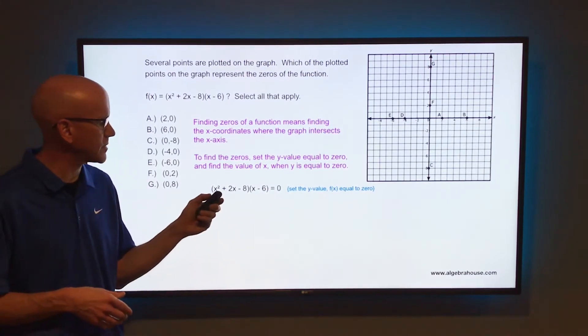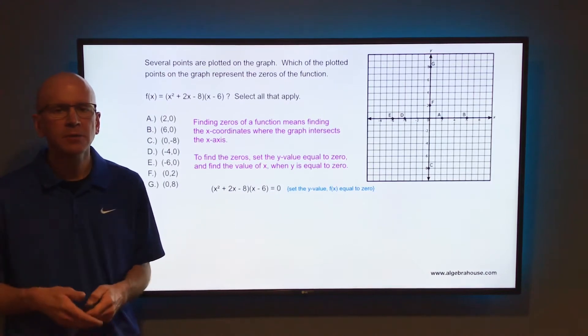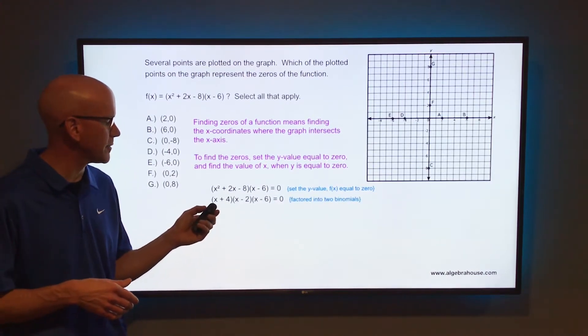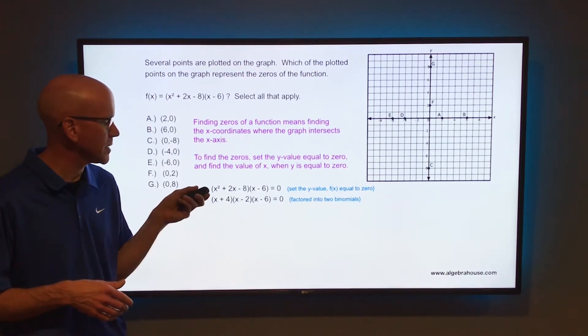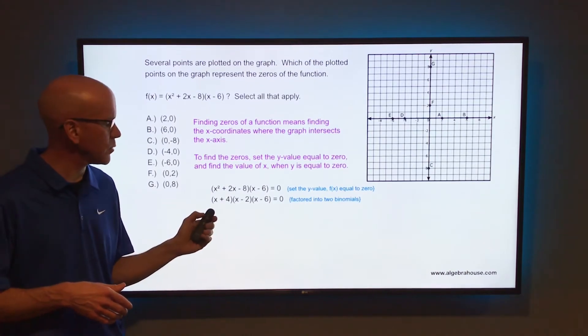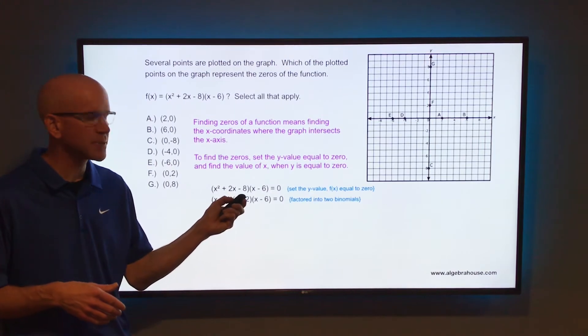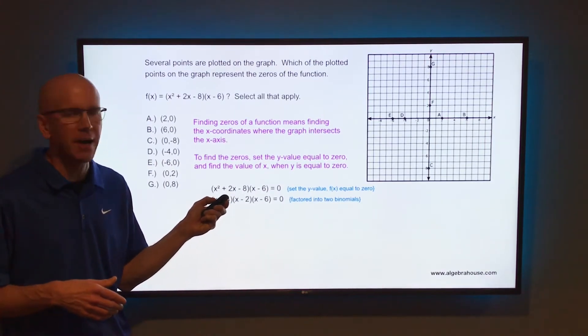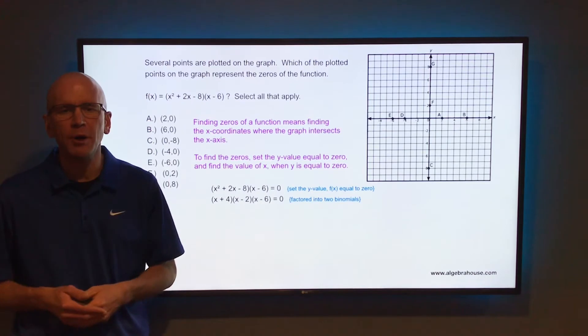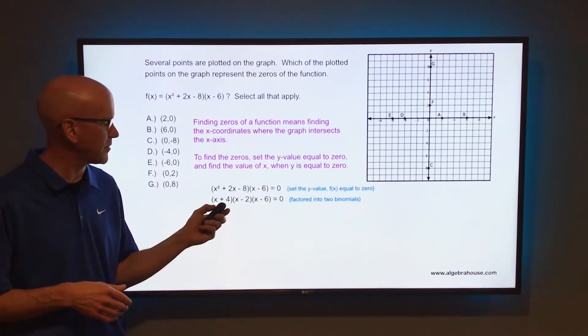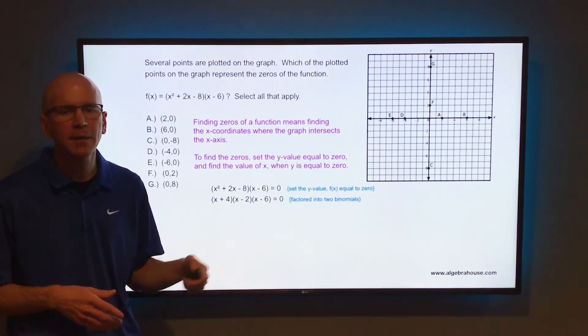We're going to factor that x² + 2x - 8 into two binomials. If you factor that into two binomials, the first terms of those two binomials make that x². So it's going to be x and x for the first terms. The second terms of those two binomials multiply to make -8 and add to make +2. So two numbers that multiply to make -8 and add to make +2 would be +4 and -2.